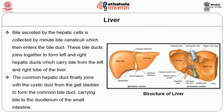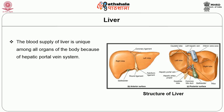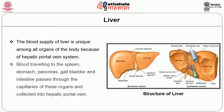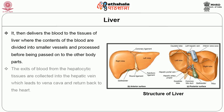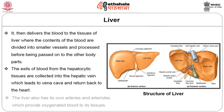The blood supply of the liver is unique among all organs due to the hepatic portal vein system. Blood traveling through the spleen, stomach, pancreas, gallbladder, and intestine passes through the capillaries of these organs and is collected into the hepatic portal vein, which then delivers blood to the liver tissues where it is processed before being passed on to other parts of the body. The blood exiting the hepatic tissues is collected into the hepatic vein, which leads to the vena cava and returns to the heart. The liver also has its own arteries and arterioles that provide oxygenated blood to its tissues.